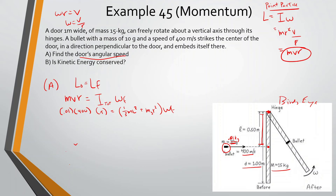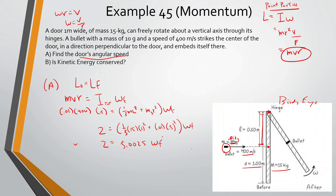So: 400 times 0.01 times 0.5 gives us 2. That equals one-third times 15 times 1 squared, plus 0.01 times 0.5 squared, times omega final. Simplifying: 2 equals 5.0025 times omega final. So 2 divided by 5.0025 gives omega final equals 0.4 radians per second.